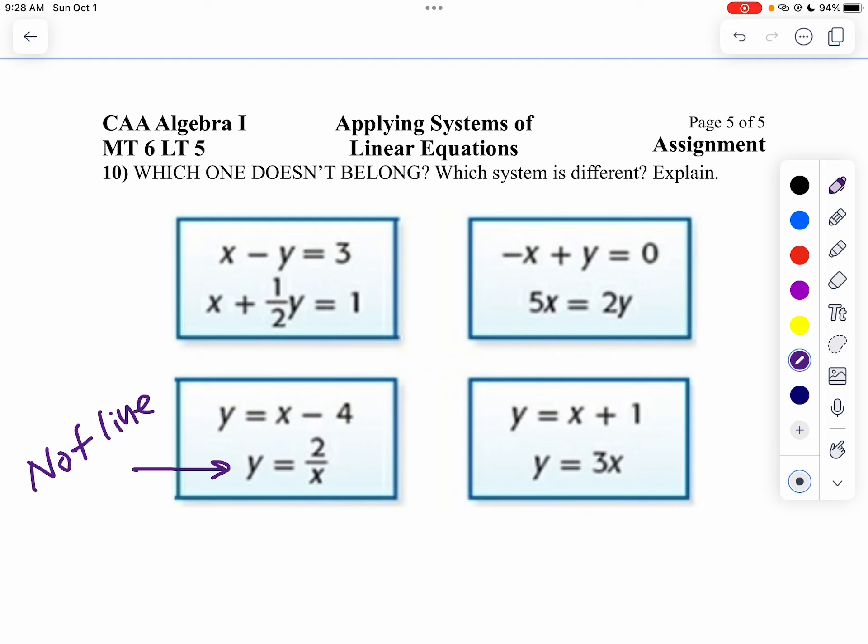But since it's not linear, we haven't gone over any of those. So I would say the third box doesn't belong because it's the only one that doesn't have two lines in your system.